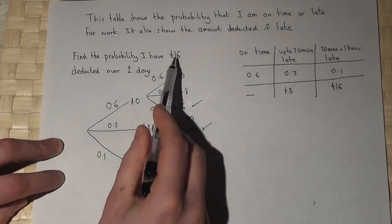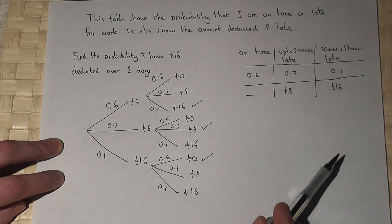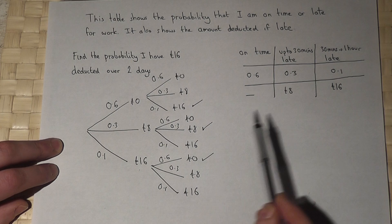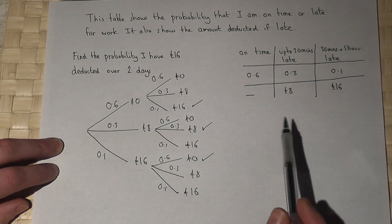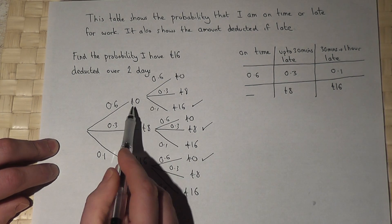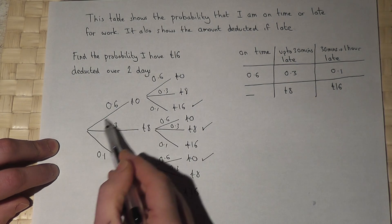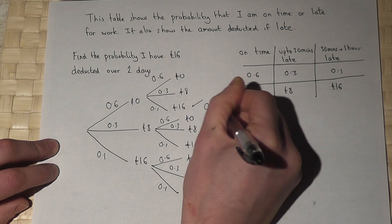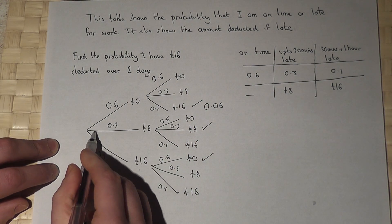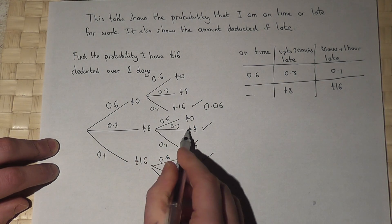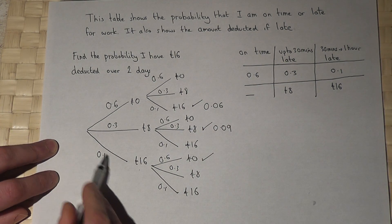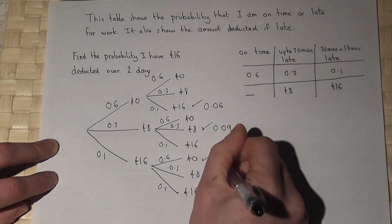To find the chance of each option through the tree diagram occurring, I times together the decimals. So this route is 0.6 times 0.1 which is 0.06. This option is 0.3 times 0.3 which is 0.09, and this option is 0.1 times 0.6 which is 0.06.